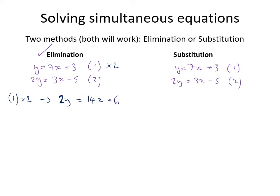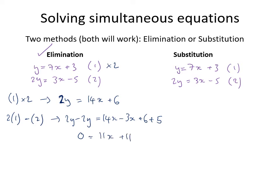Now we have 2y on the left-hand side of both equations, so we compute 2×(equation 1) minus equation 2. On the left, 2y − 2y = 0. On the right, 14x − 3x + 6 − (−5) = 11x + 11. Note it's plus 5 because a minus times a minus is a plus.